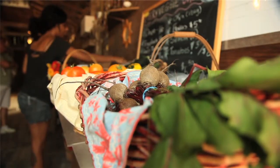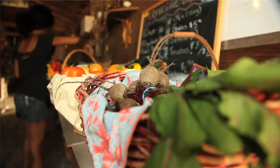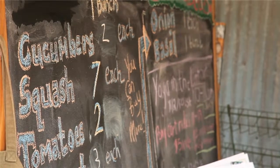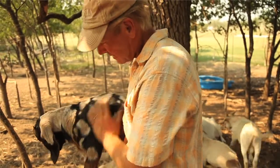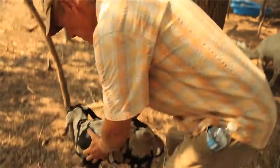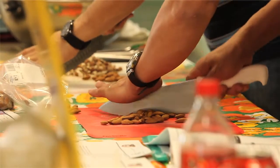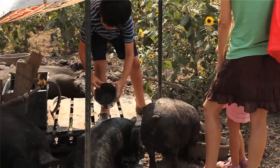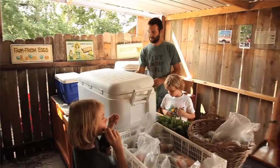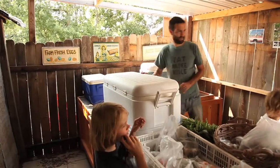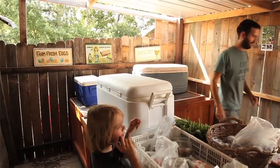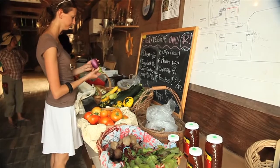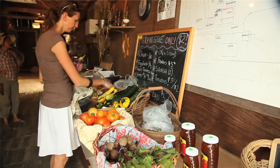A CSA is essentially a fresh food subscription service that consumers commit to for the duration of a growing season. CSAs provide a reliable revenue base for a farm and allow farmers to plan for demand. In addition, the owners offer educational programs such as cooking and canning classes for adults and farm camps for kids, which also brings in extra revenue. They maintain an open-door policy for volunteers and sponsor community events, ensuring they stay highly visible in the community.